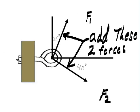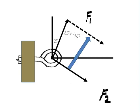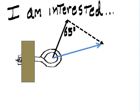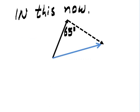First I add these two forces, F1 and F2. Up goes F2. Now I add the angles: 25 and 40 is 65. Now I slide F1 over and make a parallelogram. Draw my resultant. I am interested in this now.